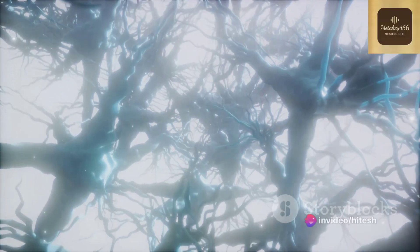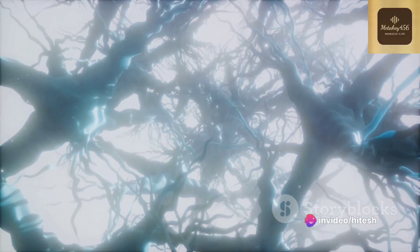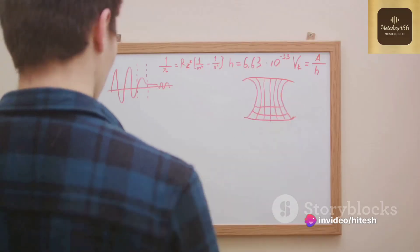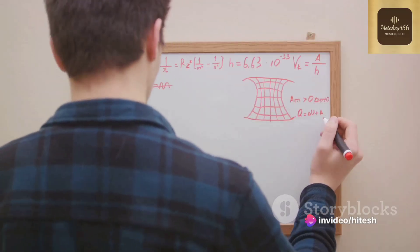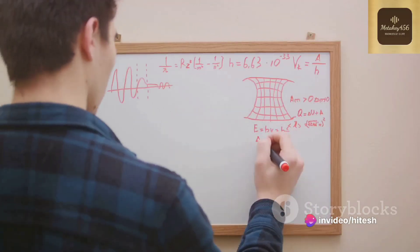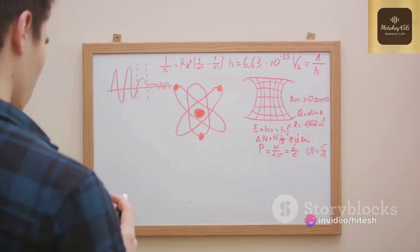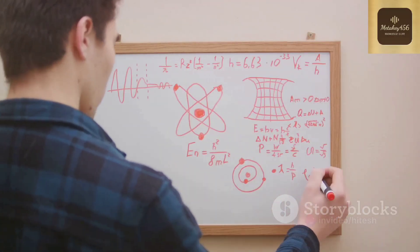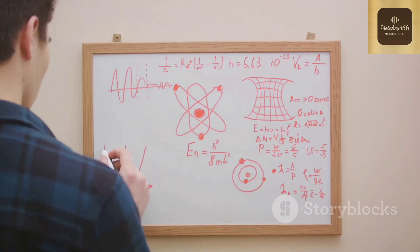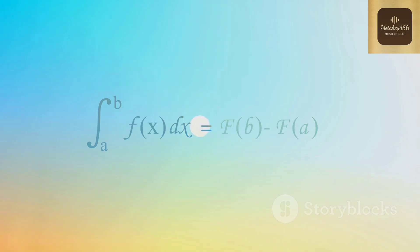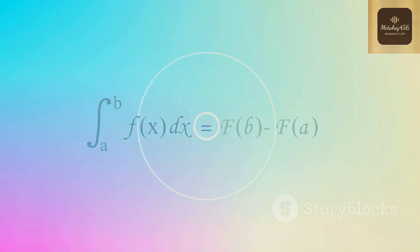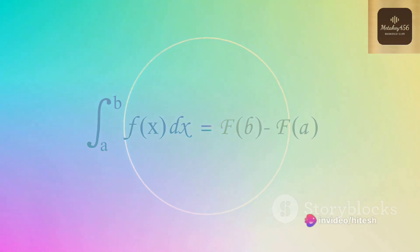But how does the network know which direction to move? This is where the concept of backpropagation comes in. It involves calculating the derivative of the loss function with respect to each weight and bias in the network. These derivatives, or gradients, indicate the direction and magnitude of change required to reduce the loss.